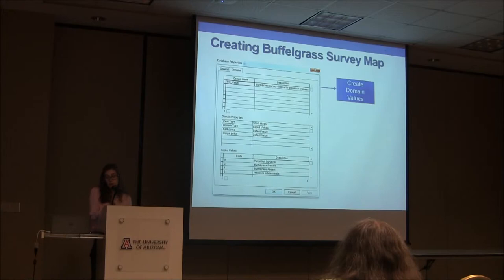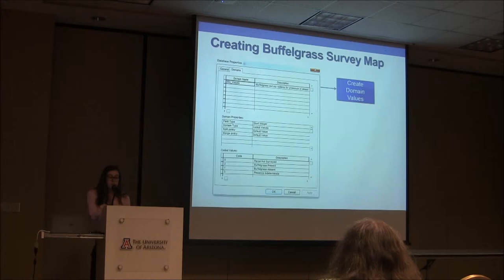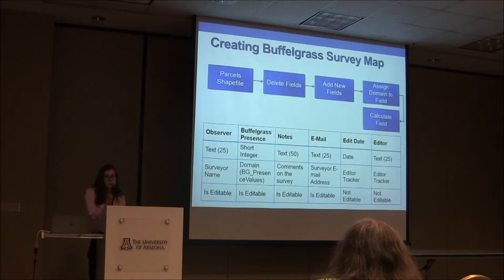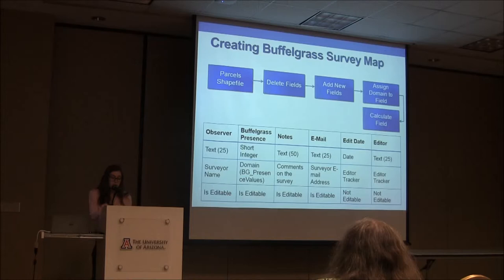I then created four values for the domain: parcel not surveyed, buffelgrass present, buffelgrass absent, and buffelgrass indeterminate. Indeterminate means that for one reason or another, the surveyor was unable to make a positive or negative identification within the parcel. I then added the parcel shapefile to the geodatabase, deleted all the fields, and added six new fields. Four out of the six fields are editable; the edit date and editor fields cannot be modified — they use the editor tracking tool and are automatically updated when a parcel's attributes are entered. I then assigned the domain buffelgrass presence values to the buffelgrass presence field and used the field calculator to set all parcels to a default value of parcel not surveyed.